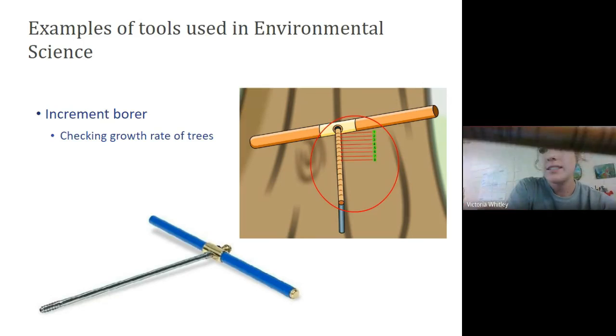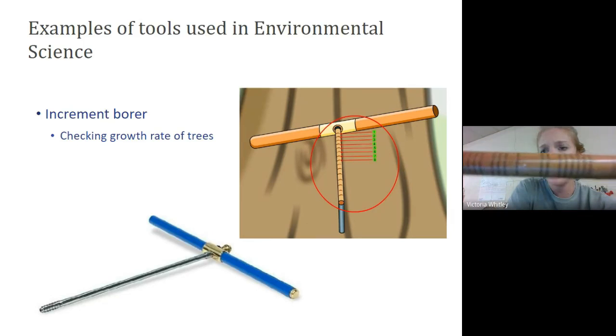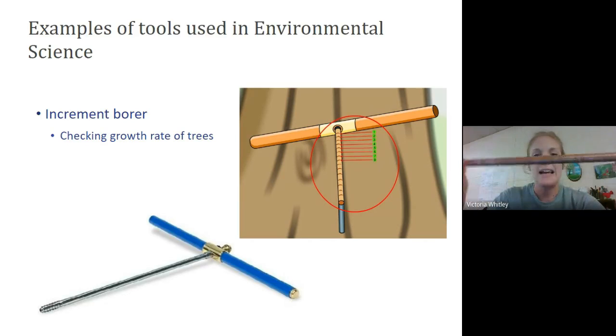It's increment borer, checking the growth rate of trees. Now, if you notice, some of these rings are bigger than others. So you're probably thinking to yourself, well, I mean, Ms. Whitley, that means that the tree grew more in those years than in others. And you're exactly right. So some years, there's more rain. Some years, there's more nutrients in the soil. Some years, there's natural disasters and the tree doesn't grow as much because it's stressed. And that is exactly what those rings on that tree can tell you is they can be indicators of what's going on in nature. Another reason to check the growth rings on trees.